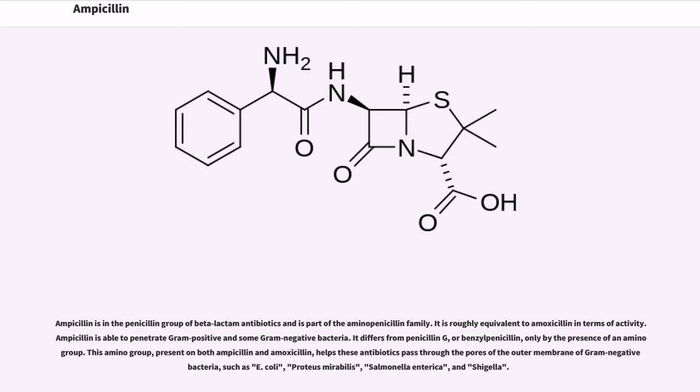Ampicillin is in the penicillin group of beta-lactam antibiotics and is part of the aminopenicillin family. It is roughly equivalent to amoxicillin in terms of activity. Ampicillin is able to penetrate gram-positive and some gram-negative bacteria. It differs from penicillin G, or benzylpenicillin, only by the presence of an amino group.